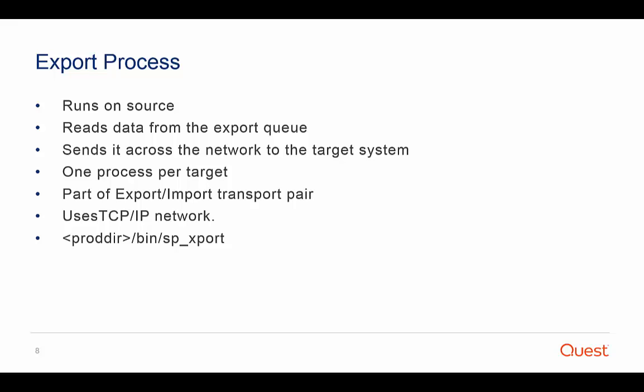The export process operates on the source system to read data from the export queue and send it across the network to the target system. By default, a source system has one export process for each of its target systems. If there are two target systems, there are two export processes, and so on. Each export process controls transmission of all data from all configurations that are replicating from a source system to a target system. The export process is the first part of the export-import transport pair, which moves data between systems over a TCP/IP network. The export process is named SPXPORT and resides in the bin sub-directory of the SharePlex product directory.